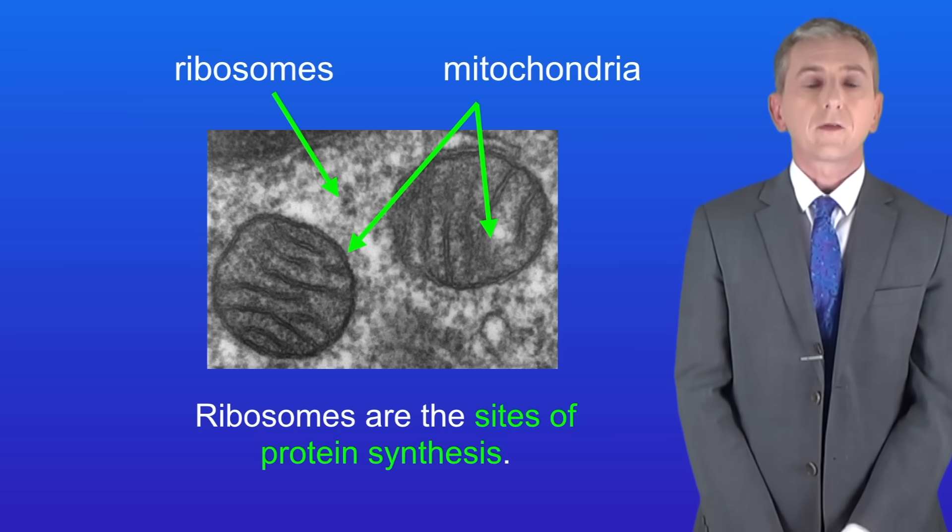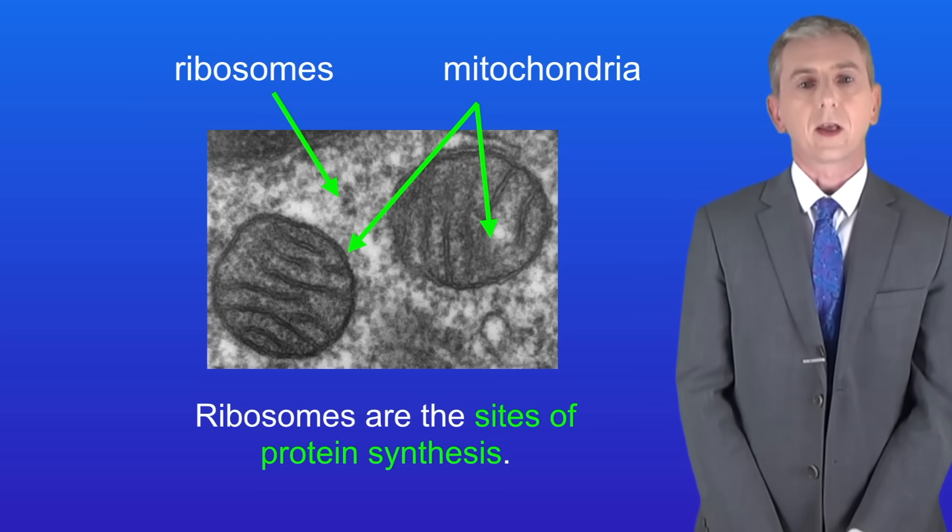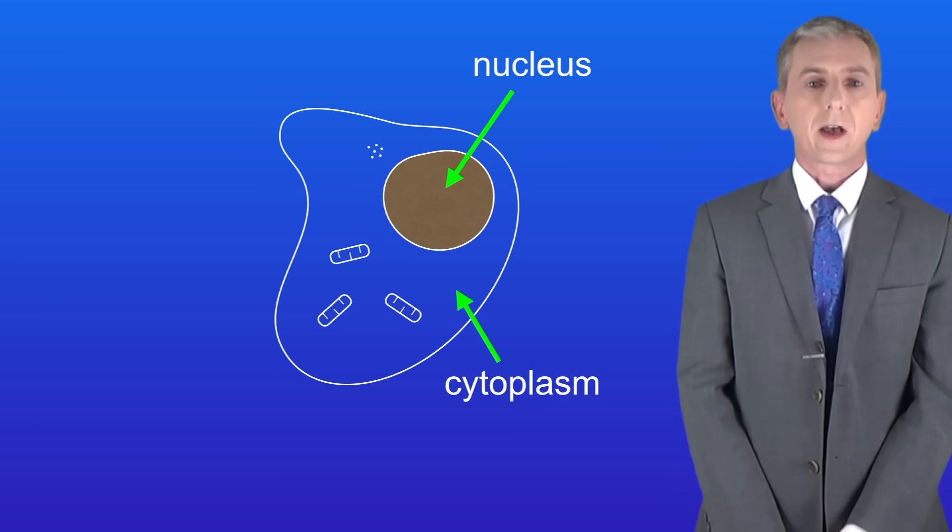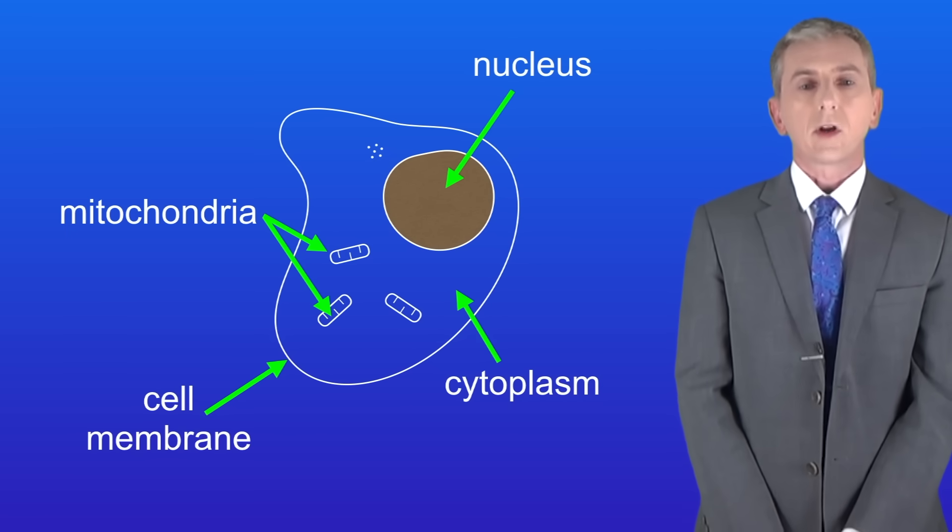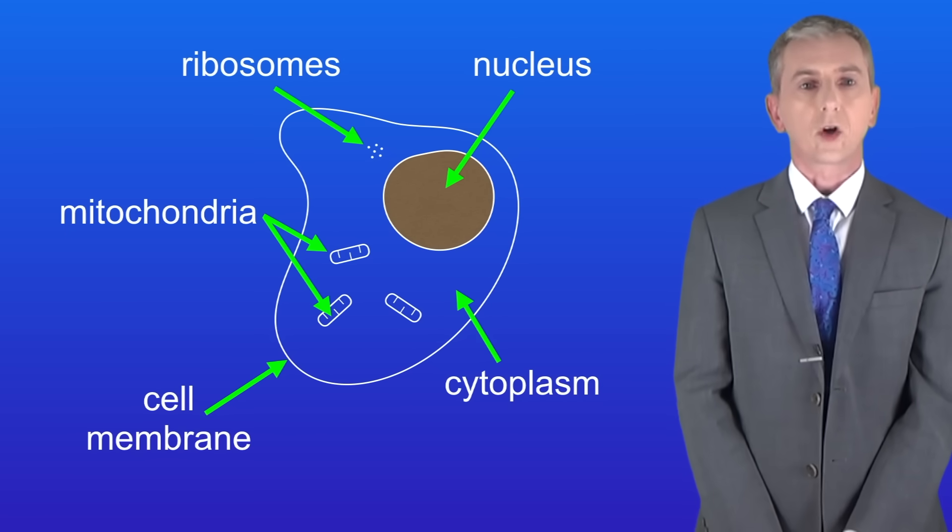Now in the exam you could be asked to identify structures from a diagram of a cell such as this one. So pause the video now and try to identify the structures in the diagram. Okay so we've got the nucleus, the cytoplasm and the cell membrane. We've also got mitochondria and finally ribosomes.